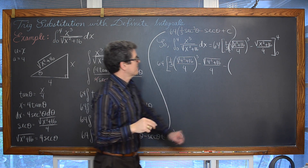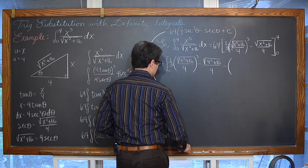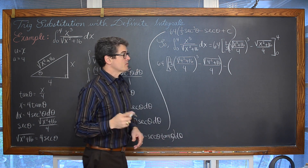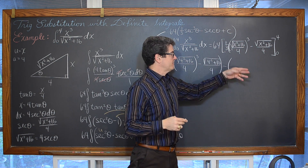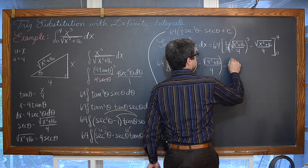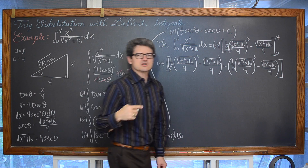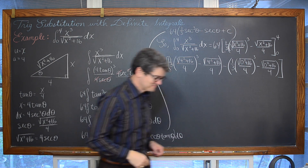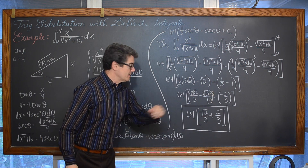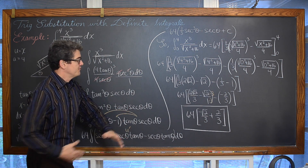When plugging in the lower limit of 0, we include the minus sign carefully to distribute the negative and avoid sign errors. After plugging in 4 and then 0 and cleaning up the arithmetic, we get: the definite integral equals 64 times (−√2/3 + 2/3). Fantastic — that is the final answer by Method 1.